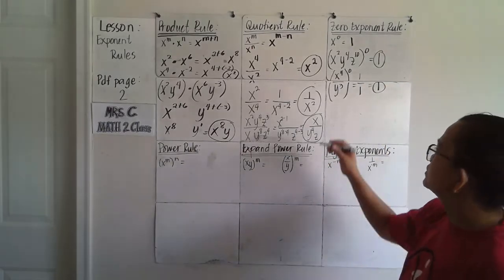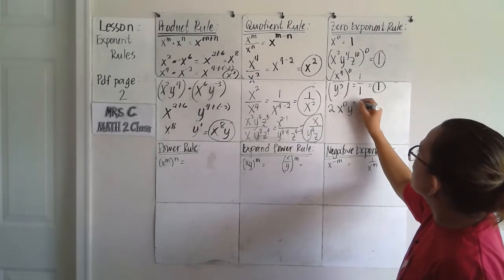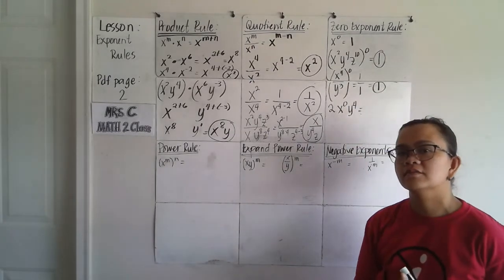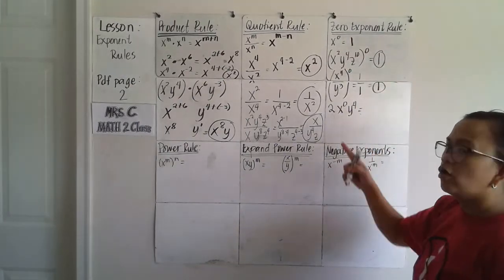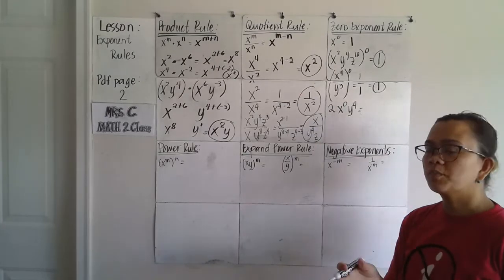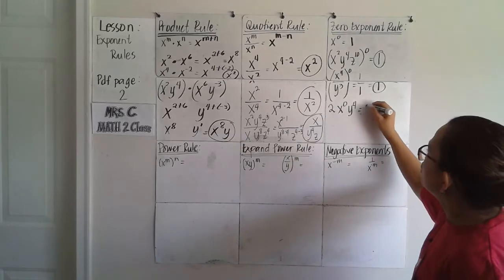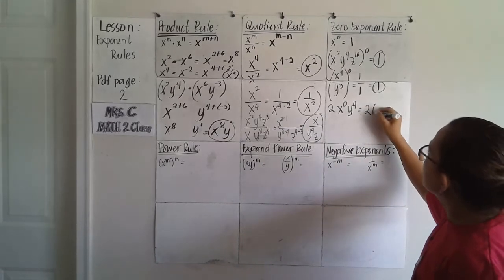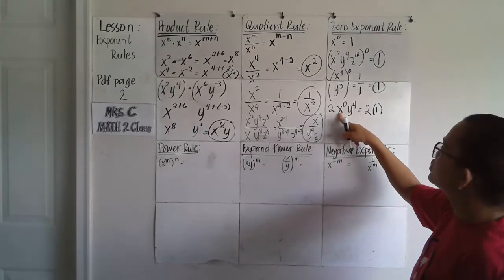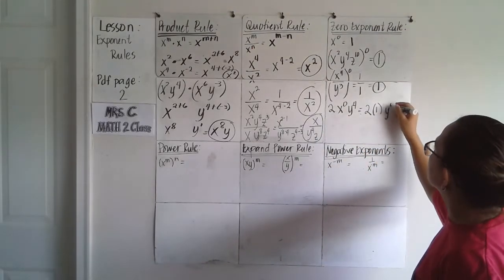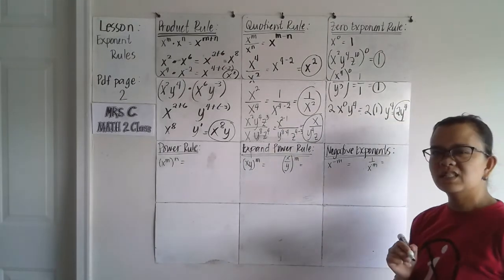A tricky example: 2 times x to the 0 power times y to the 4th. You only apply the zero exponent rule to the base with the 0 power. Terms without a 0 exponent get copied as-is. Turn x to the 0 into 1, keep 2 and y to the 4th, so the final answer is 2y to the 4th.